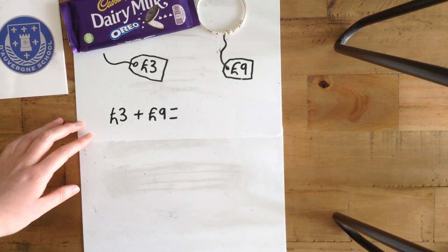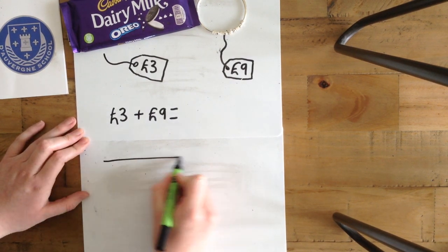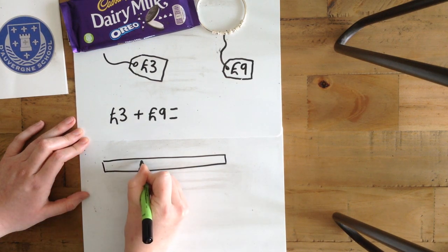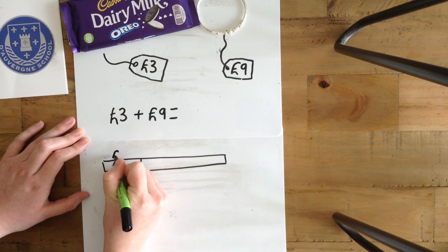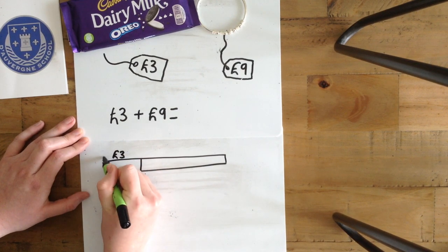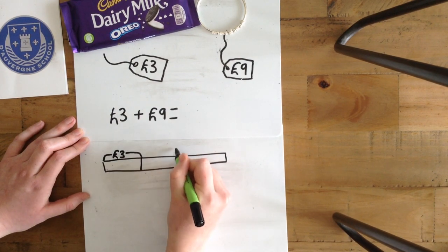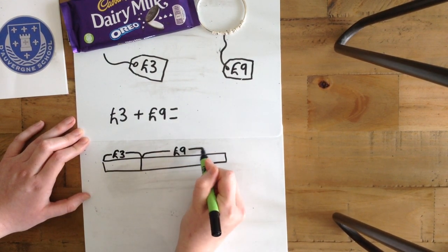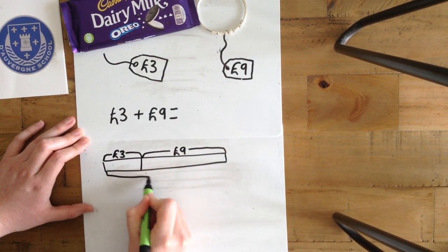I'm going to show you using a bar model. First, we draw our bar. Then we're going to split it. This part of the bar is showing the £3. All of this is showing the £3. This part is showing £9. We need to work out what it is all together.